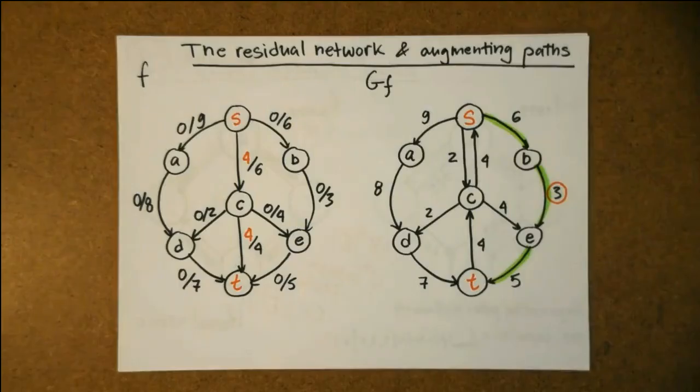The approach to the maximum flow problem we're going to consider now is to iteratively increase the flow we put through the network until an optimal one is reached. This is achieved by finding what's called an augmenting path from the source S to the sink T in a residual network that illustrates the capacities that have not yet been used as well as the flow in the flow network. This general scheme for solving the problem is known as the Ford-Fulkerson method.